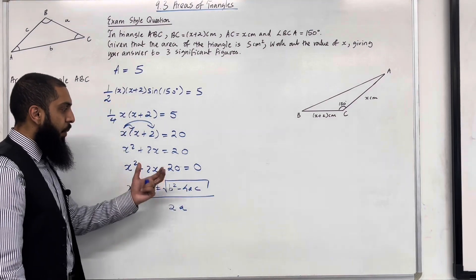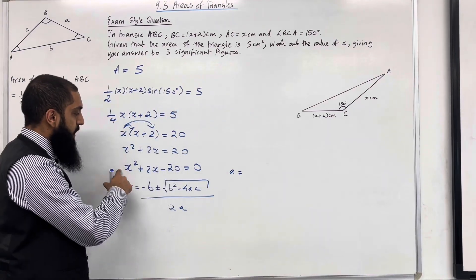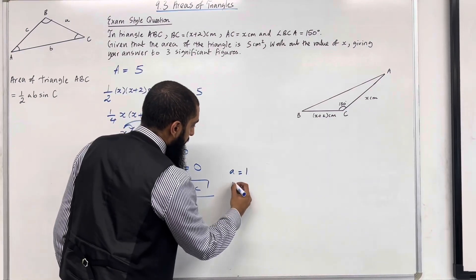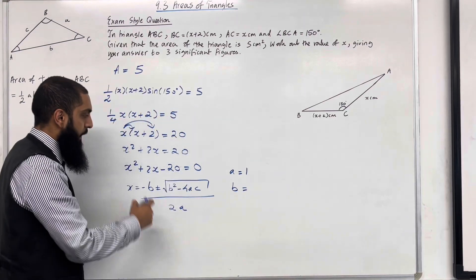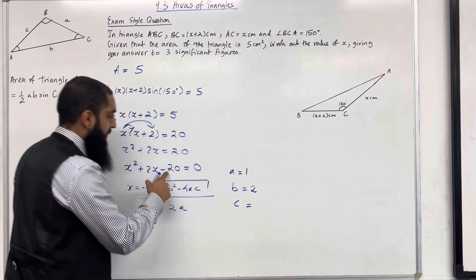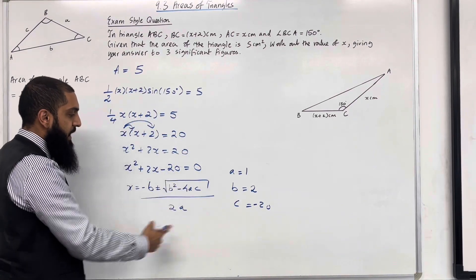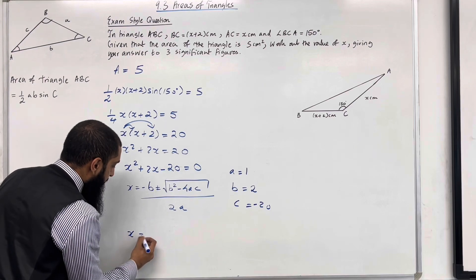So in this quadratic equation, a is the coefficient of x squared which is 1. b is the coefficient of x which is 2. And c is the constant term which is minus 20. So if I plug this into the quadratic formula, I'll get the solutions.